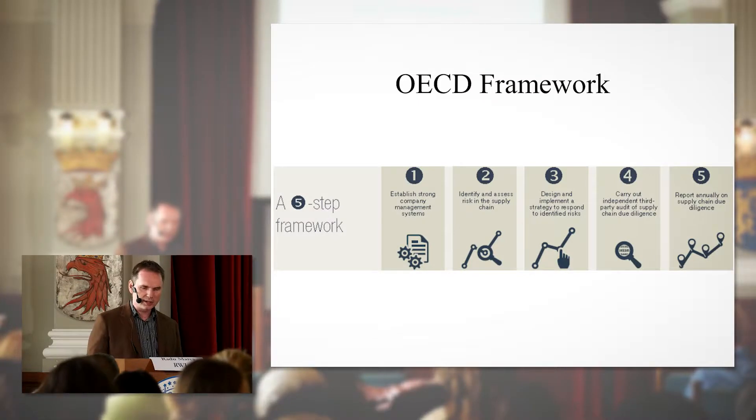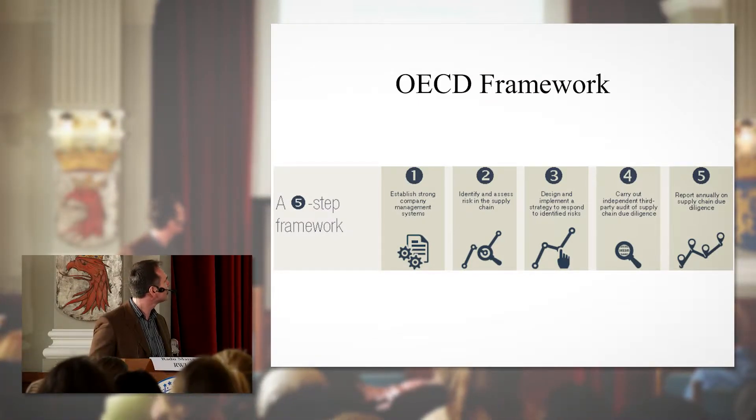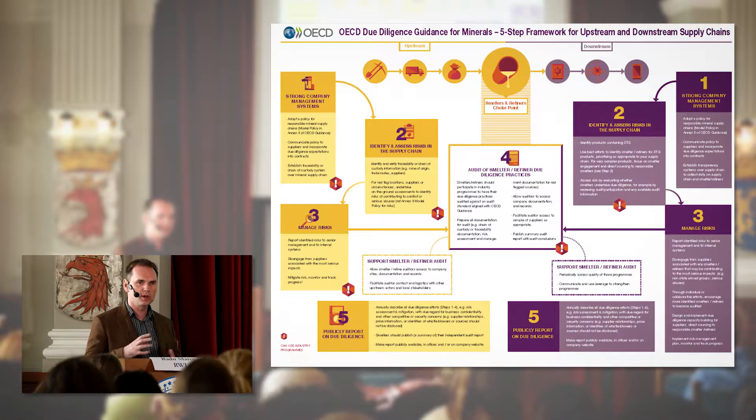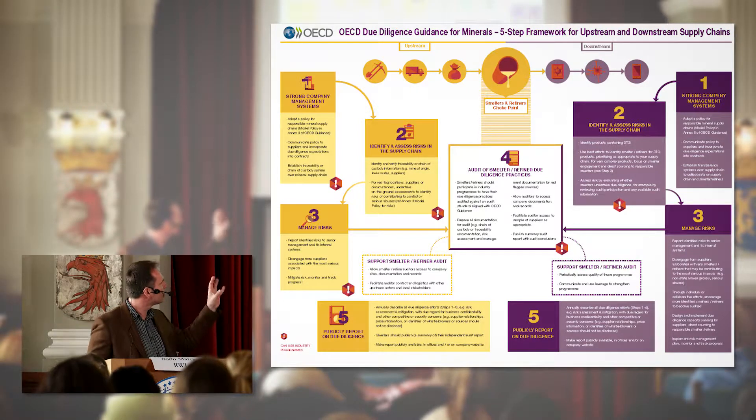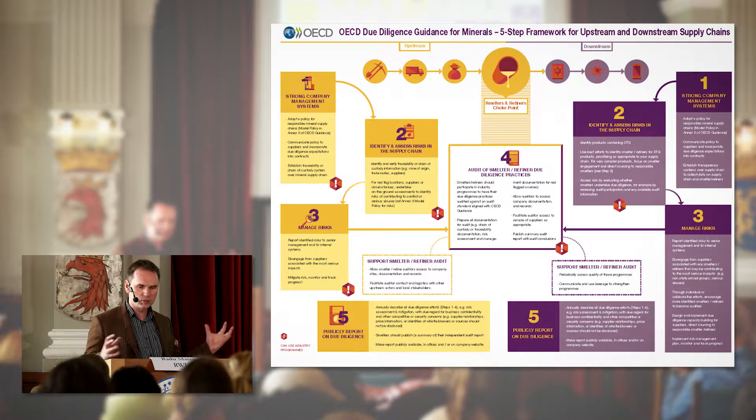Step four is getting audited by a third party — otherwise what you say has no credibility, and the chain is only as strong as its weakest link. Step five is releasing data: communicating your due diligence findings to entities higher up in the supply chain and ultimately to consumers. The OECD also provides a detailed breakdown showing how roles and responsibilities of different players — upstream or downstream — become quite differentiated. At the center is the smelter or refiner, the choke point where information from upstream converges and flows downstream, because retailers and manufacturers cannot go and check every mine.